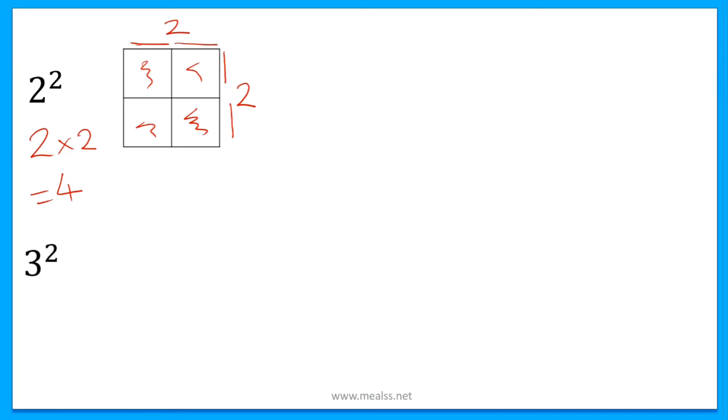Here's another example: 3 squared. So 3 squared would be 3 multiplied by 3, which equals 9. And if you check this square, each side has 3, and if we check smaller squares inside, we find that there are 9.